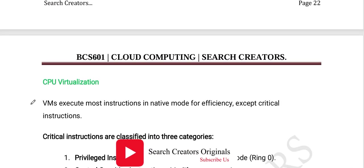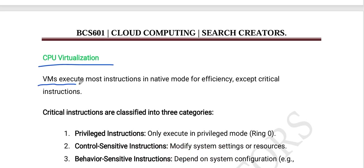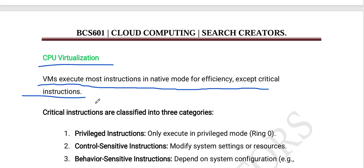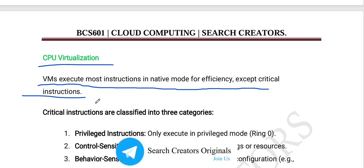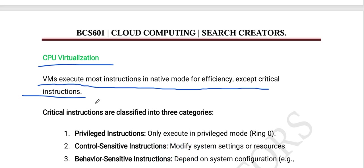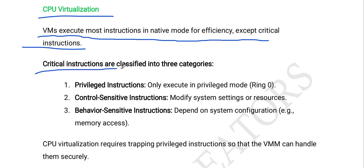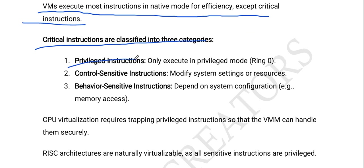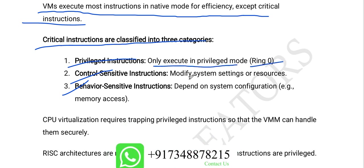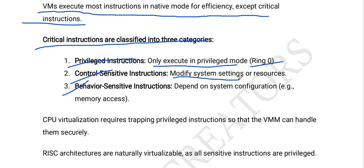Virtual machines execute most instructions in native mode for efficiency, except critical instructions. Critical instructions are classified into three categories: privileged instructions, which only execute in privileged mode (ring zero); controlled sensitive instructions, which modify system settings or resources; and behavior sensitive instructions, which depend on system configuration, for example memory access.